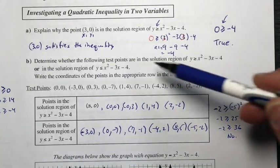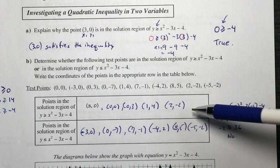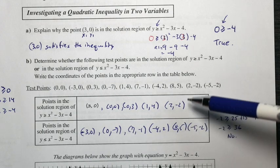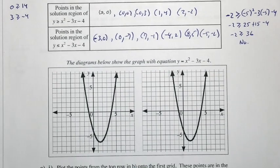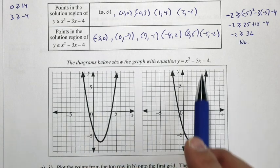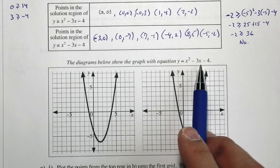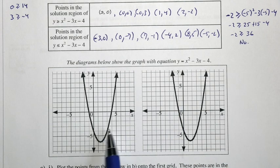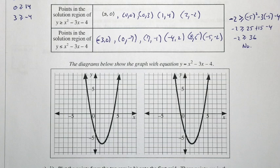When we have a set of test points, it will either satisfy or it won't — there's nothing else in real numbers. Looking at this graph, we have two copies of this parabola y equals x squared minus 3x minus 4. We're going to plot the points from the top row into the first grid.